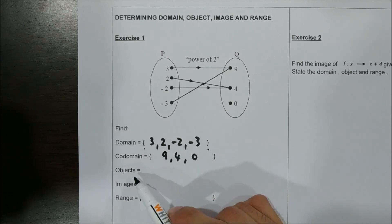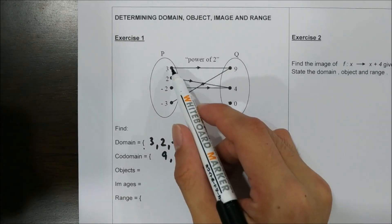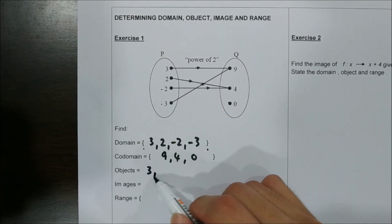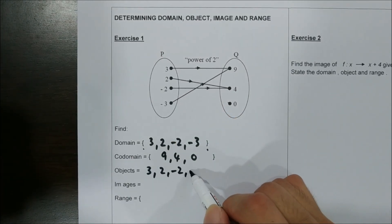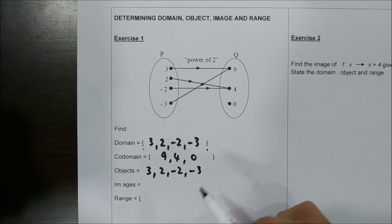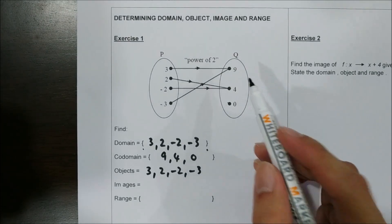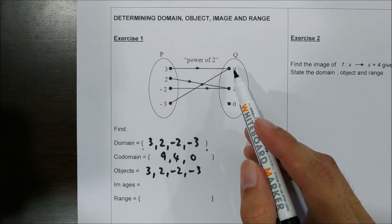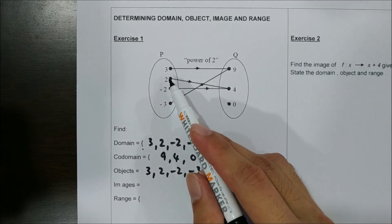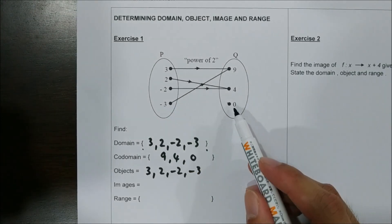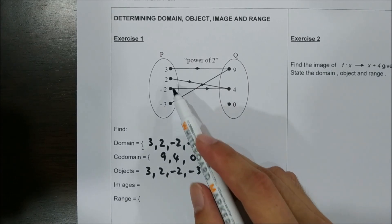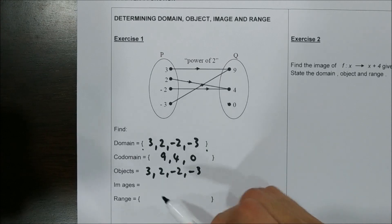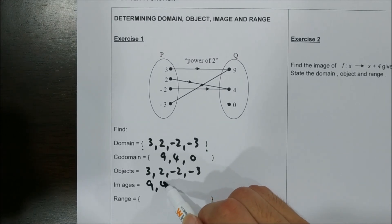Now we look for objects. All these numbers on the left are objects, so you just write: 3, 2, negative 2, negative 3. Whereas images are the numbers which are related to the object. The number 0 here is not related to any of these objects, so it's not considered as an image. So the answer is 9, then 4.